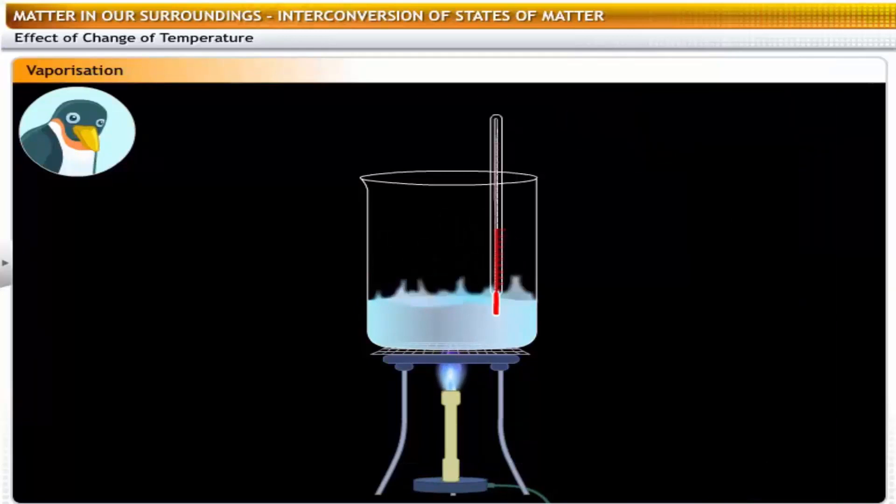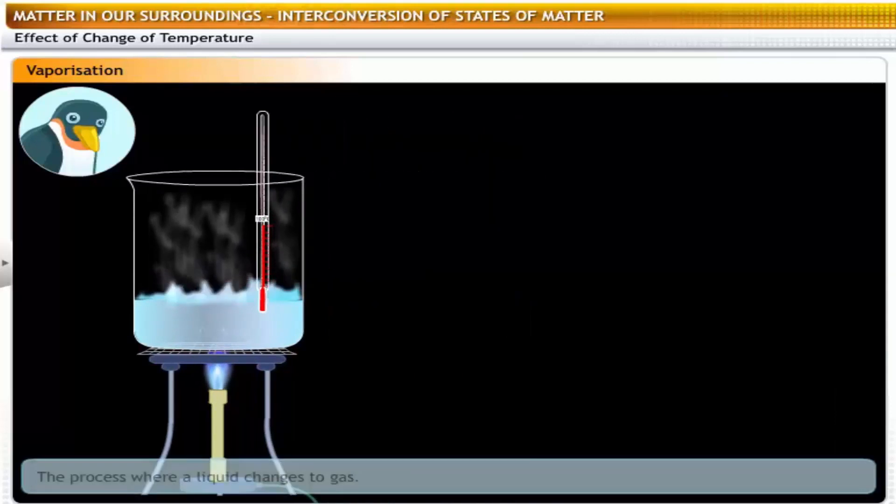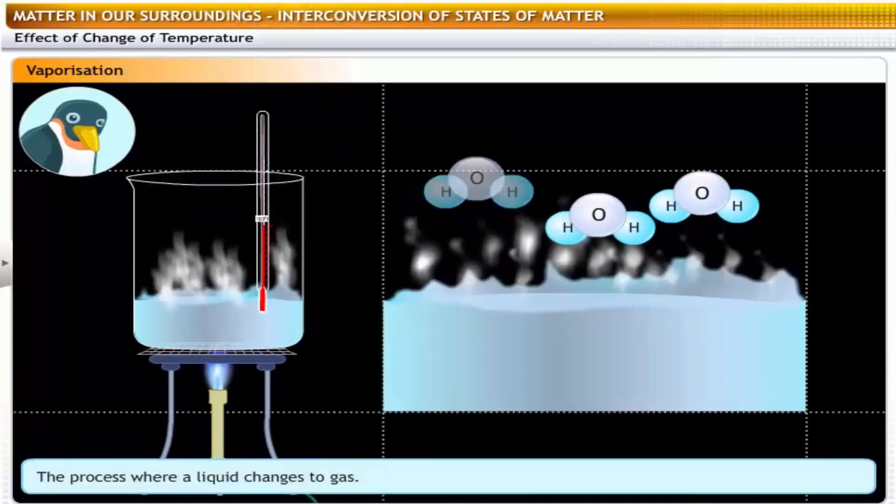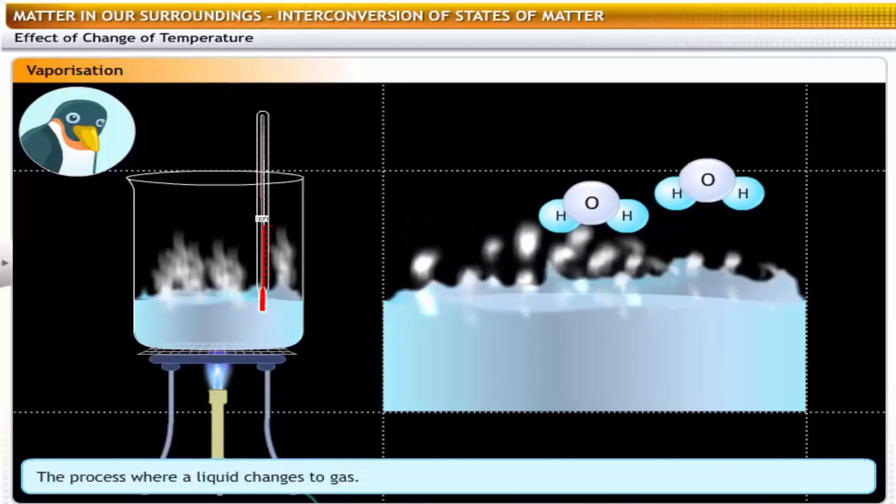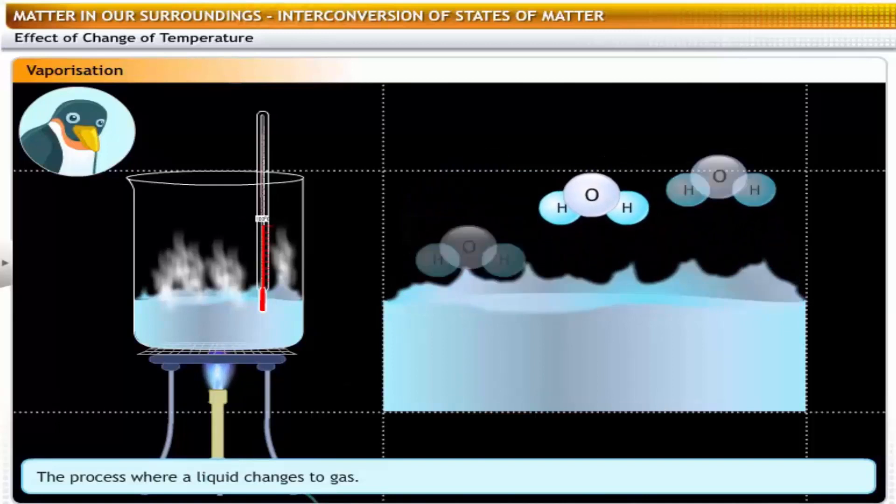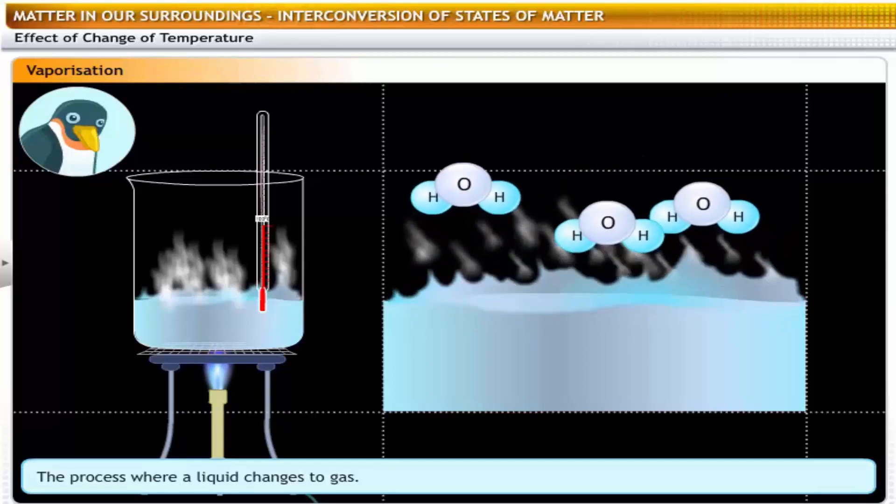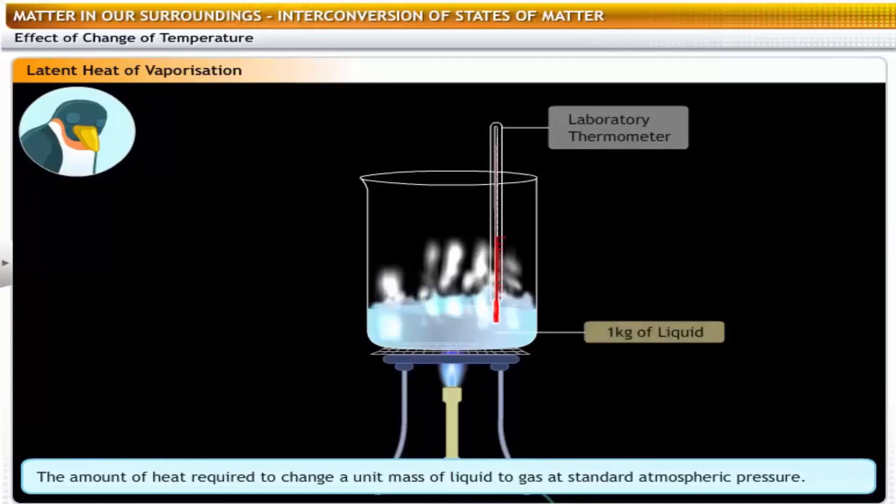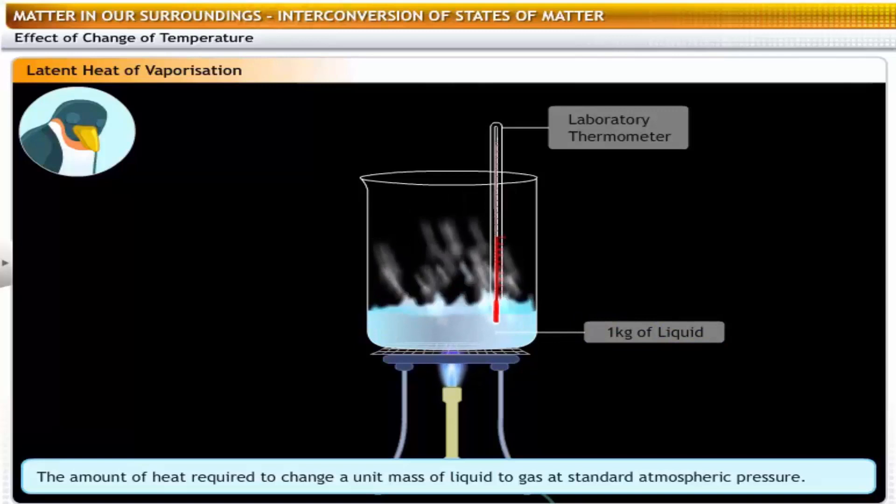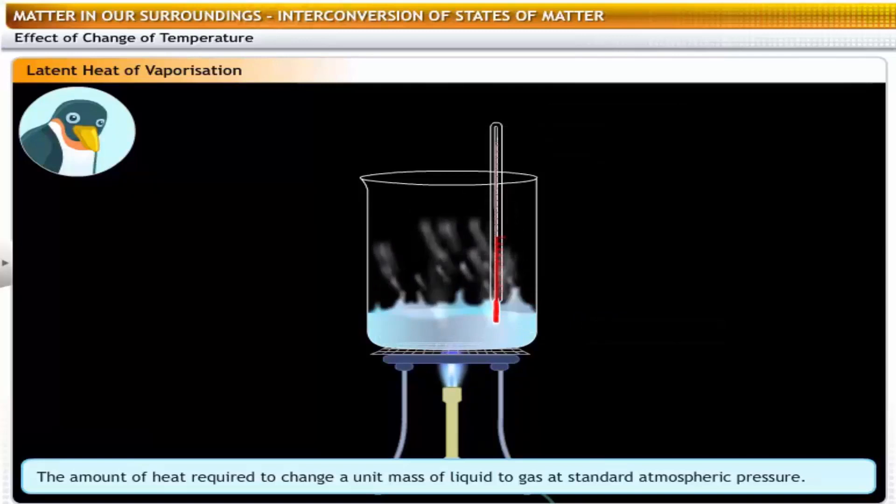Water boils at 100 degrees Celsius. At that temperature it changes from the liquid state to the gaseous state. Just like in the case of ice turning to water, this change of state also requires latent heat. When one kilogram of a substance in the liquid state changes into its gaseous state at the same temperature and at standard atmospheric pressure, the heat energy used up is known as the latent heat of vaporization of that substance.